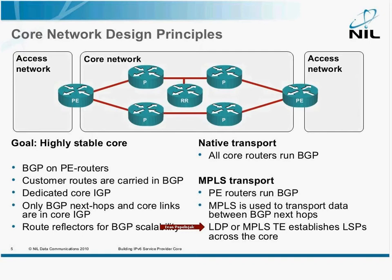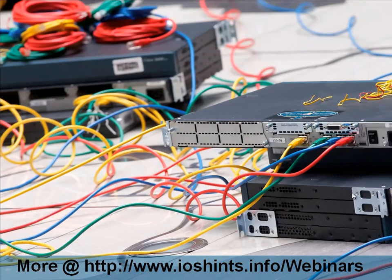As you'll see later on, the IPv6 version of LDP and MPLS Traffic Engineering is not yet implemented. The drafts have already been written, but the implementation is simply not there yet. So if you want to have MPLS in your IPv6 network, you have to use IPv4 to transport the signaling messages across.